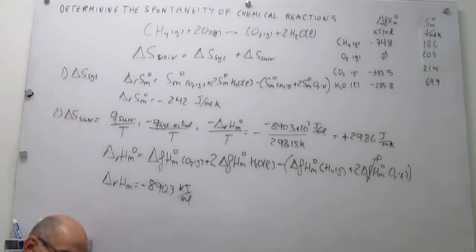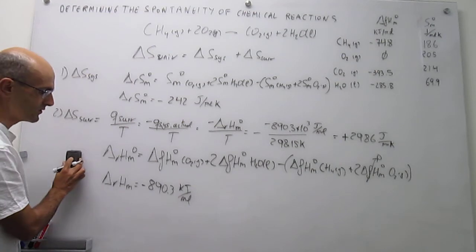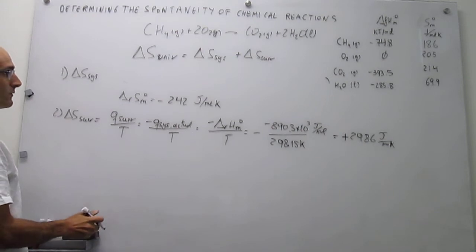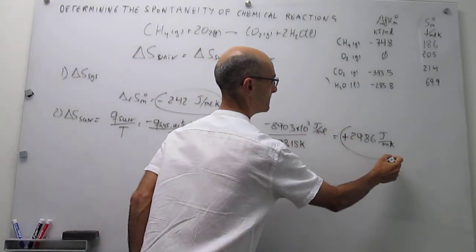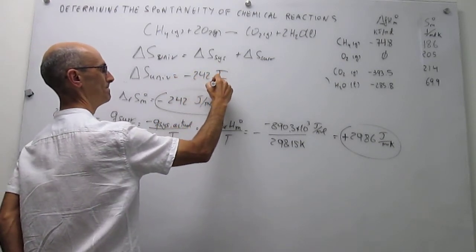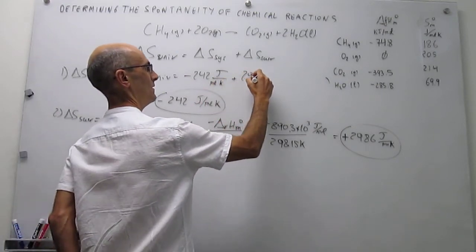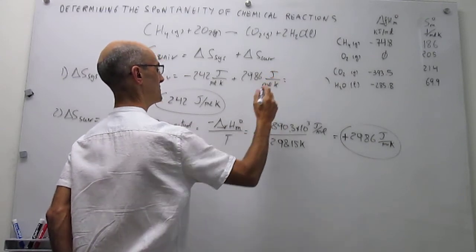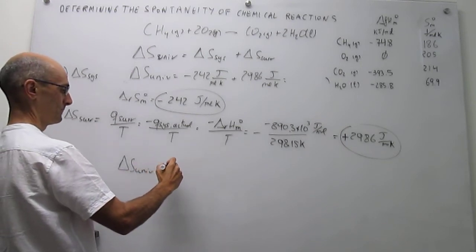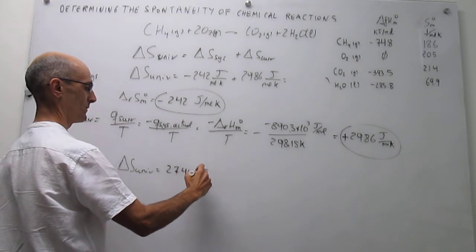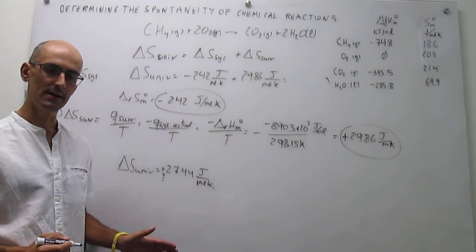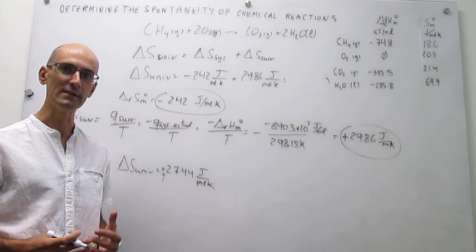We now have both pieces needed to calculate the change in entropy in the universe, which determines whether the reaction is spontaneous. ΔS_universe = ΔS_system + ΔS_surroundings = −242 J/mol·K + 2986 J/mol·K = +2744 joules per mole Kelvin. The important thing is that this sign is positive, and with that we can conclude forcefully that this reaction is spontaneous.